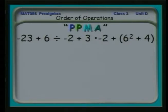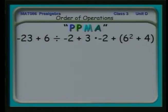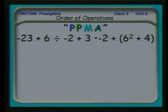Let's look at a slightly more complex example. I see that I have one set of parentheses: 6 squared plus 4. I need to deal with that first, treating it as a sub-problem. Then I need to check for any powers outside of that, deal with multiplications, and then additions and subtractions.